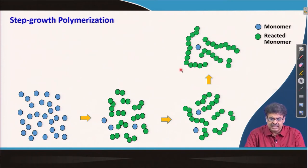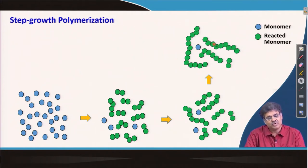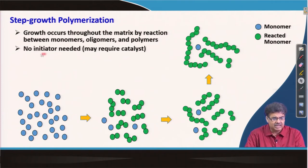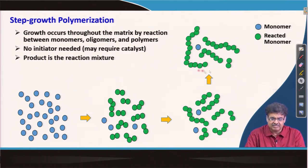In step growth polymerization, even if we have some small molecules present, the entire mixture is the product — unlike chain growth, where only the polymer chains are the product. This is a fundamental difference. The growth of the chain occurs throughout the matrix by reaction between monomers, oligomers, and polymers. No initiator is needed usually, but sometimes a catalyst is needed. Importantly, the product is the reaction mixture itself, not just isolated polymer molecules.